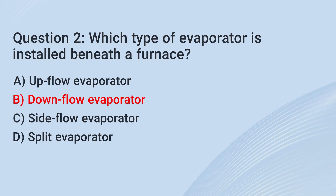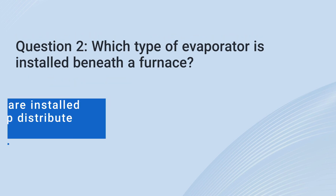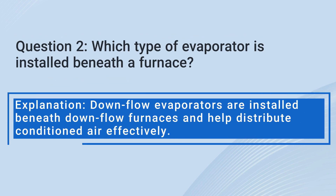The correct answer is b: Downflow evaporator. Explanation: Downflow evaporators are installed beneath downflow furnaces and help distribute conditioned air effectively.